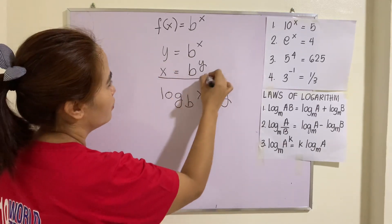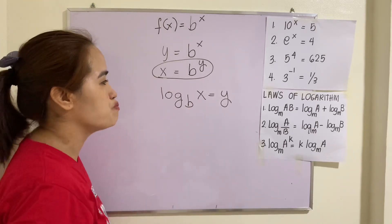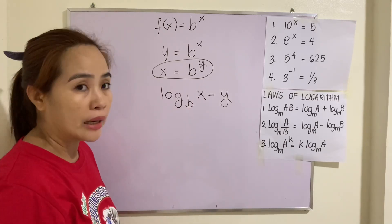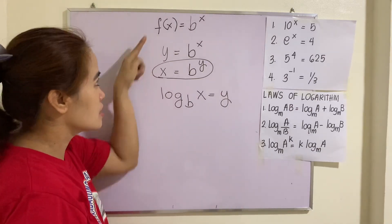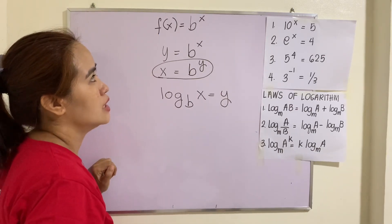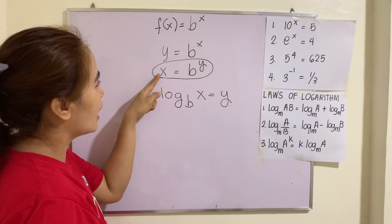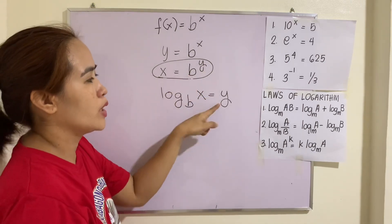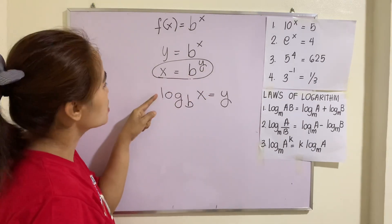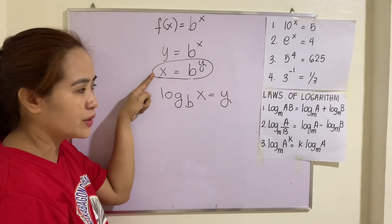The equivalent of this is log_b(x) = y. Now, this one is the inverse of f(x) = b^x. Again, this is log of x to the same base b is equal to the exponent y. So, this one is the equivalent of this.